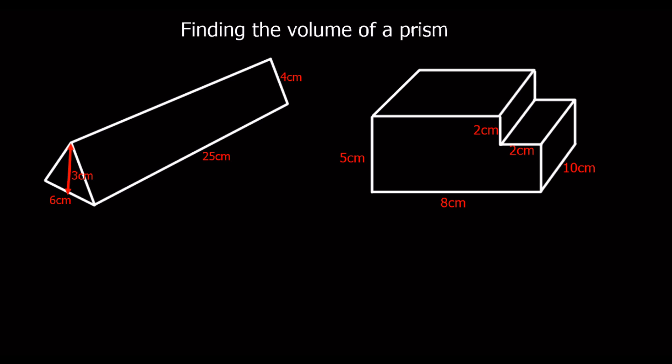Okay, so if you can try these questions, pause the video and give them a go. Remember, it's area of cross section times the length — area of the front times how far back it goes.